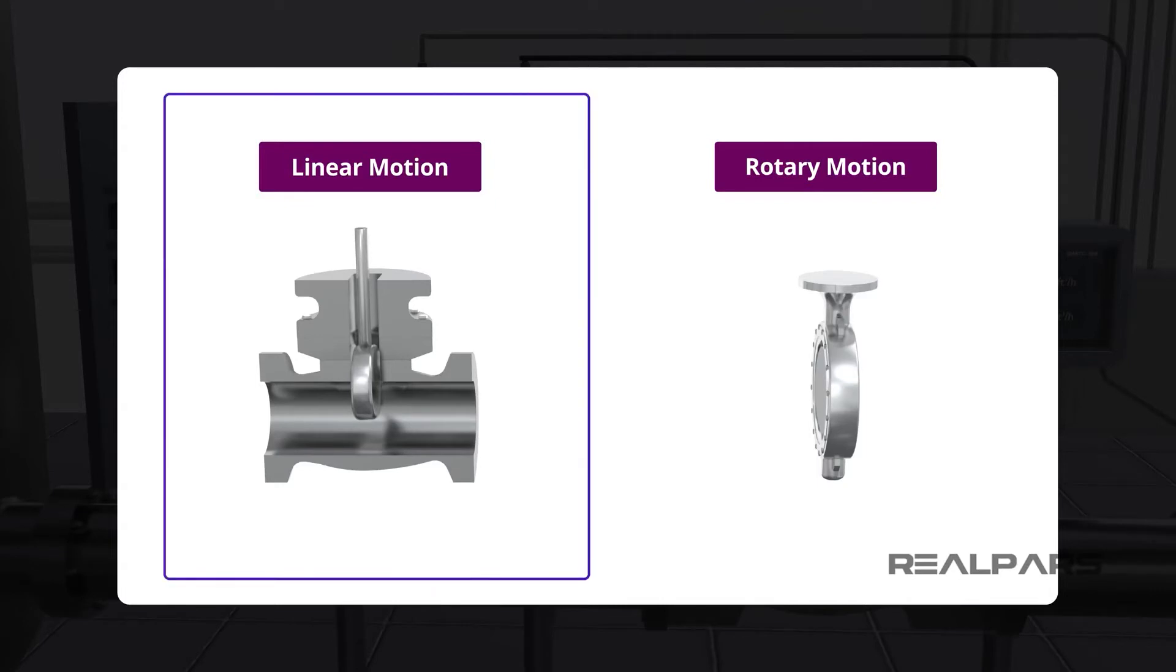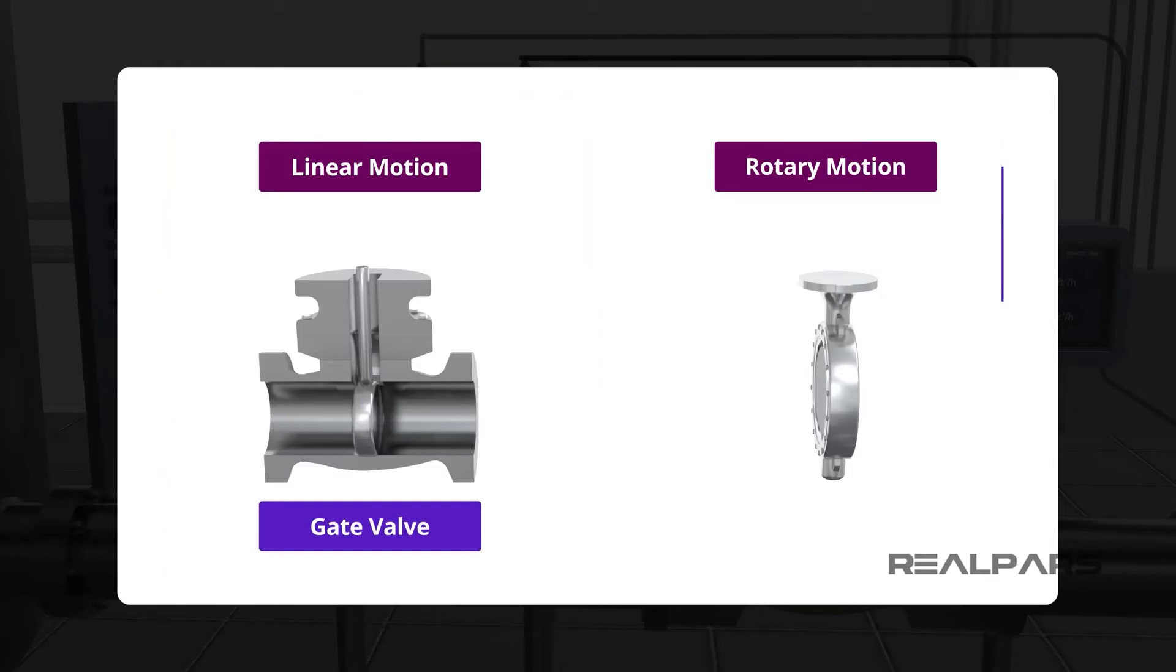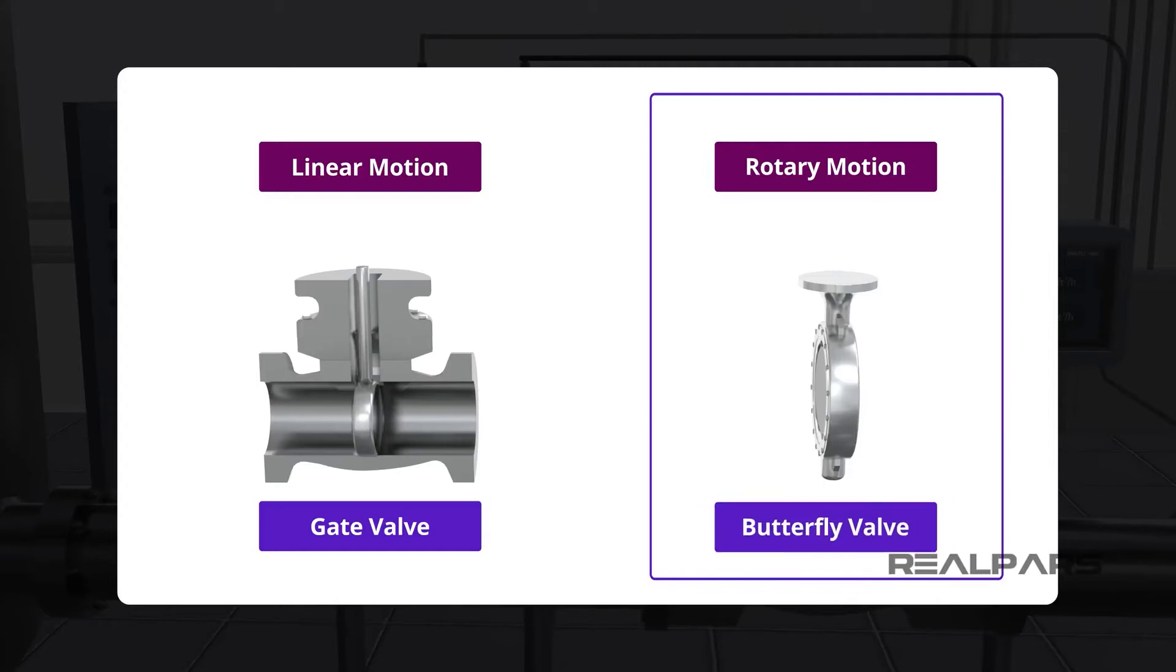On a linear motion valve, the stem and valve movement is up and down. A common type of sliding control valve is the gate valve. A rotary motion valve in almost all cases rotates 90 degrees from open to the closed position. A commonly used rotary valve is the butterfly valve.